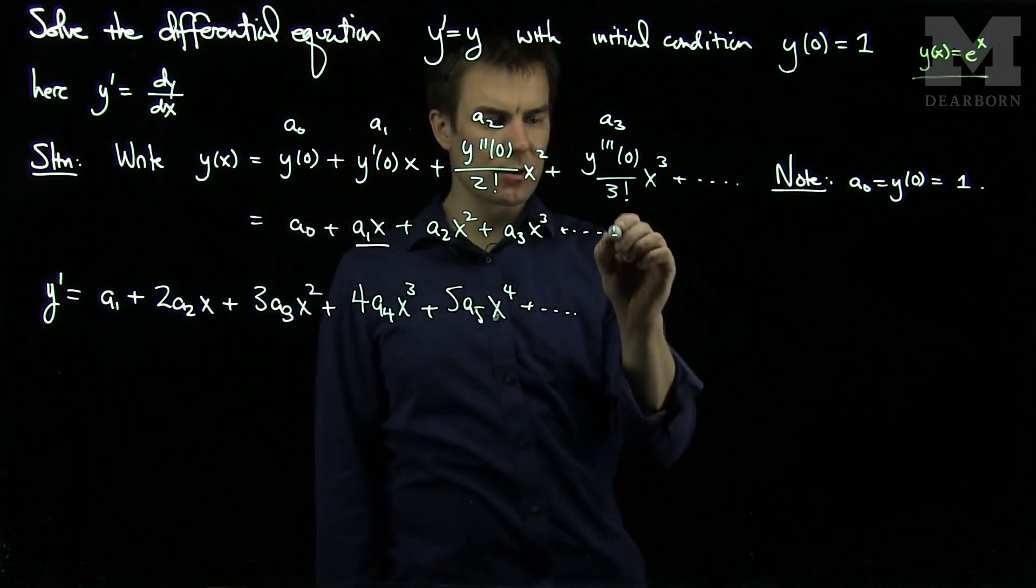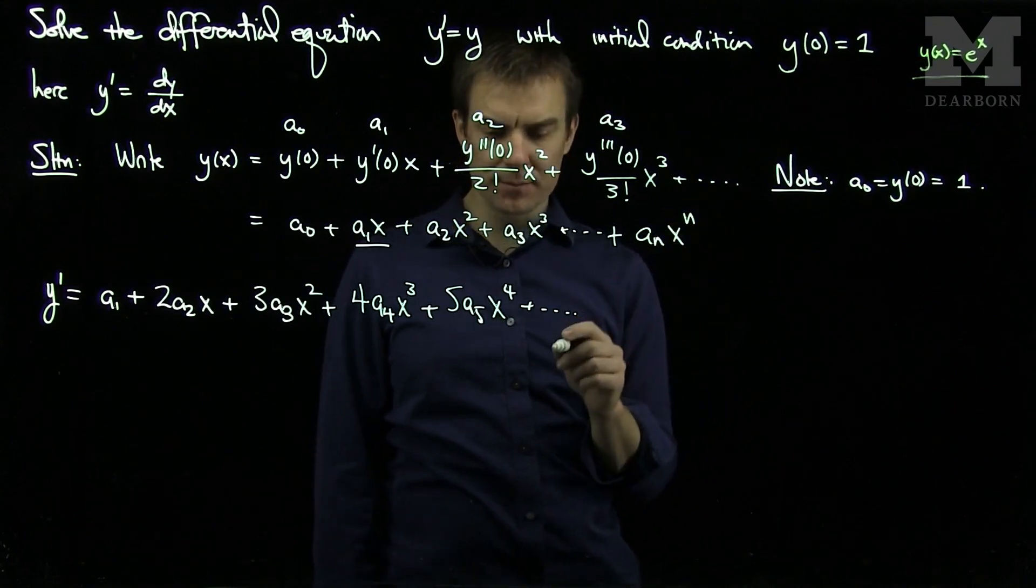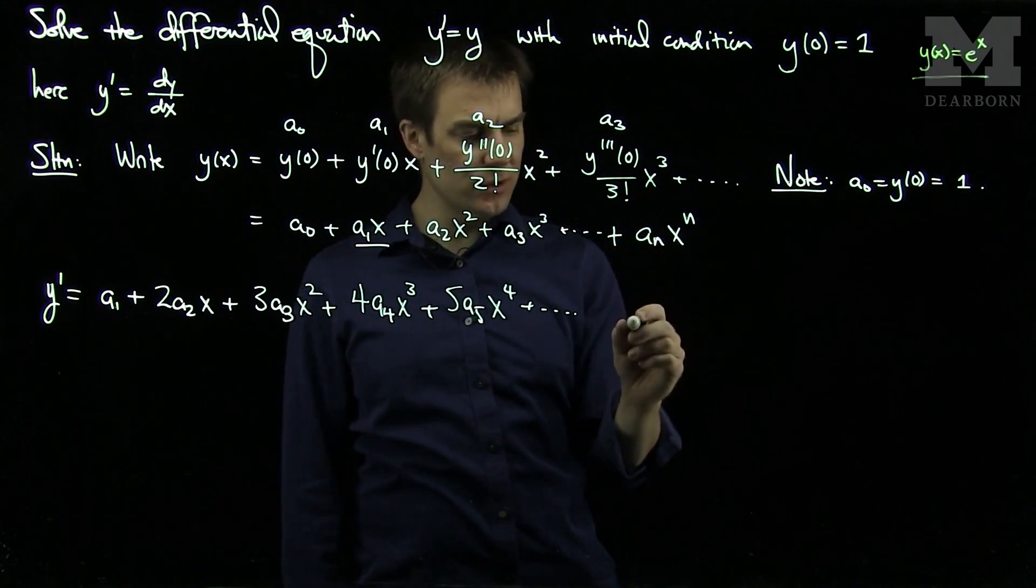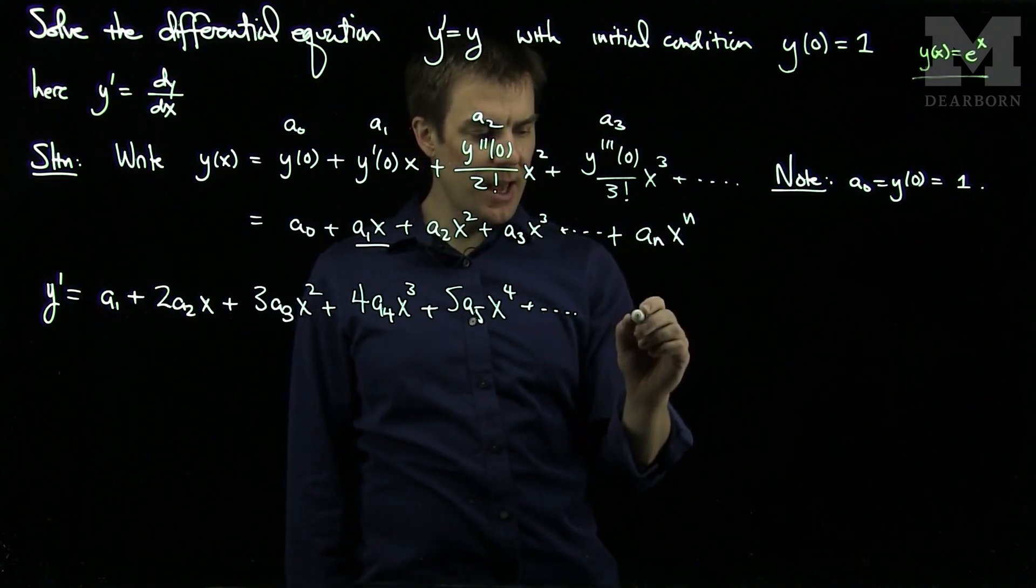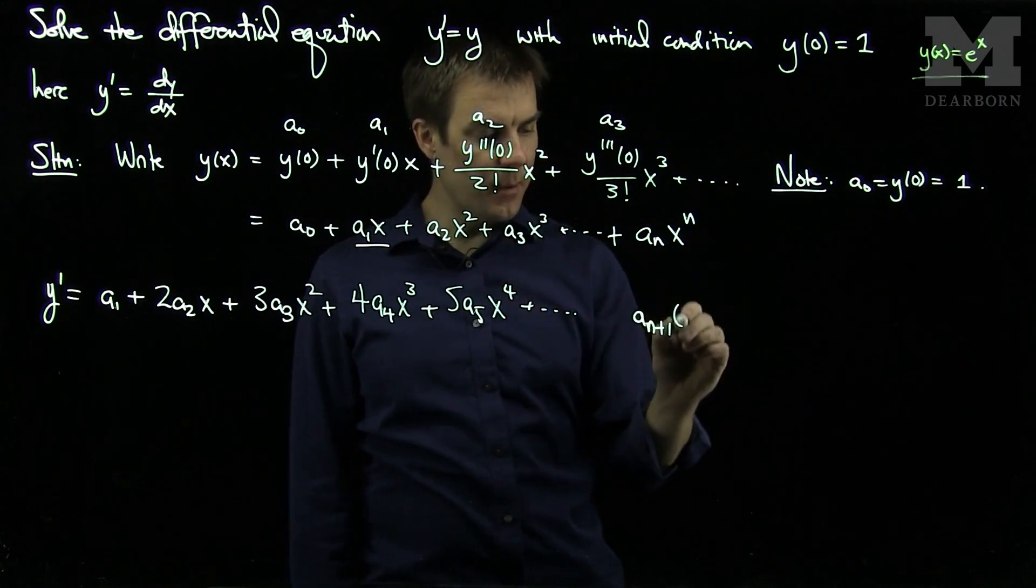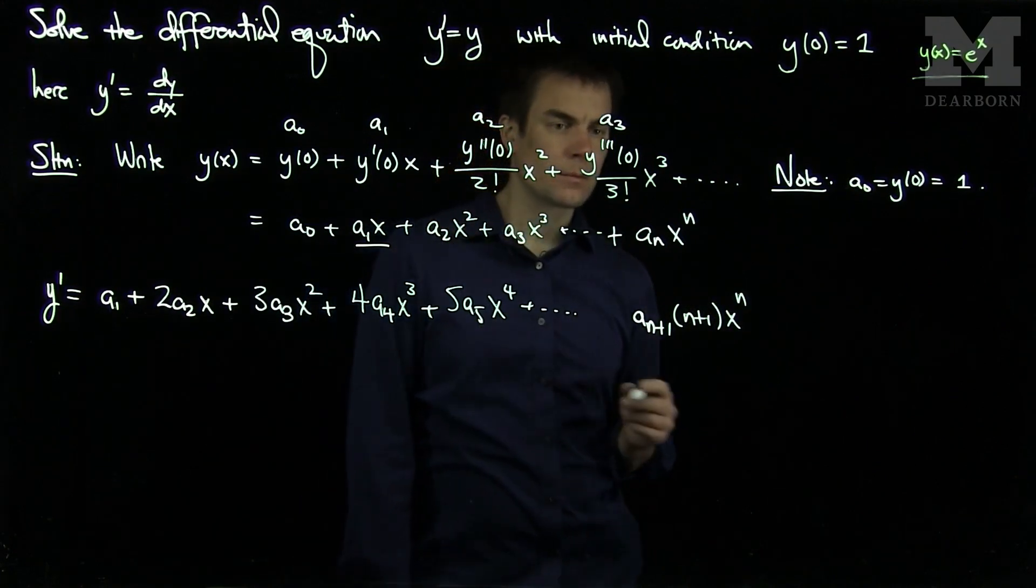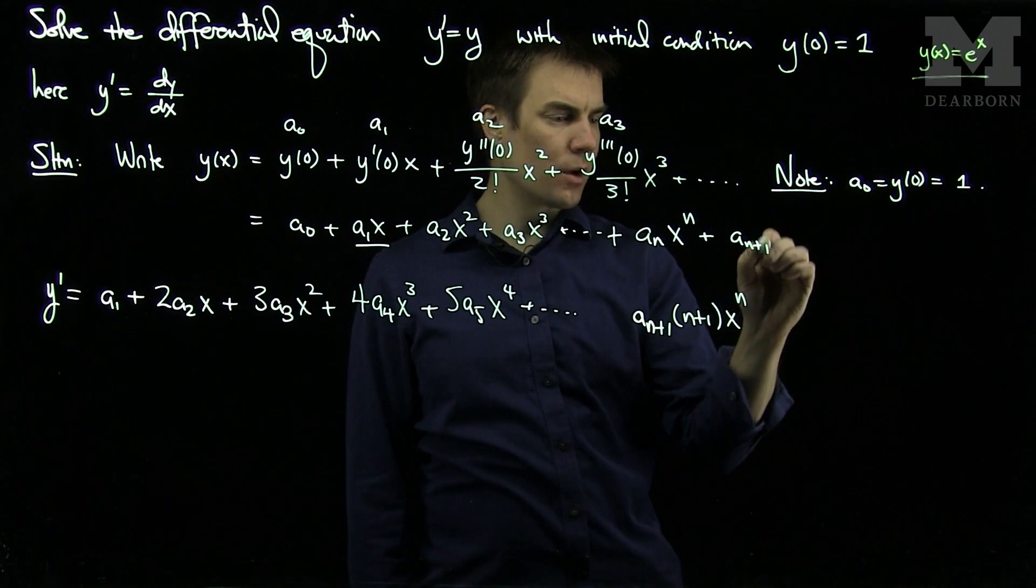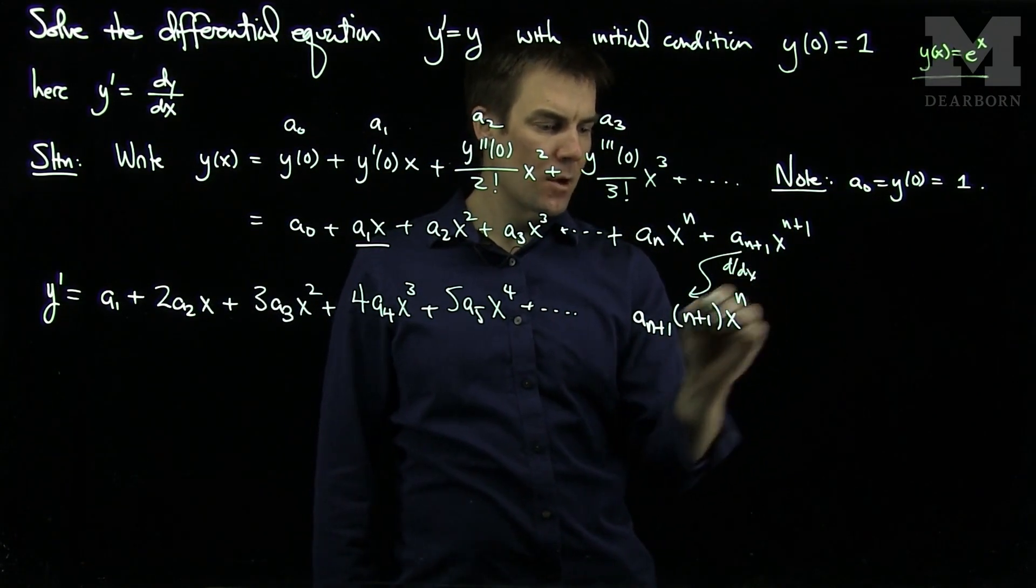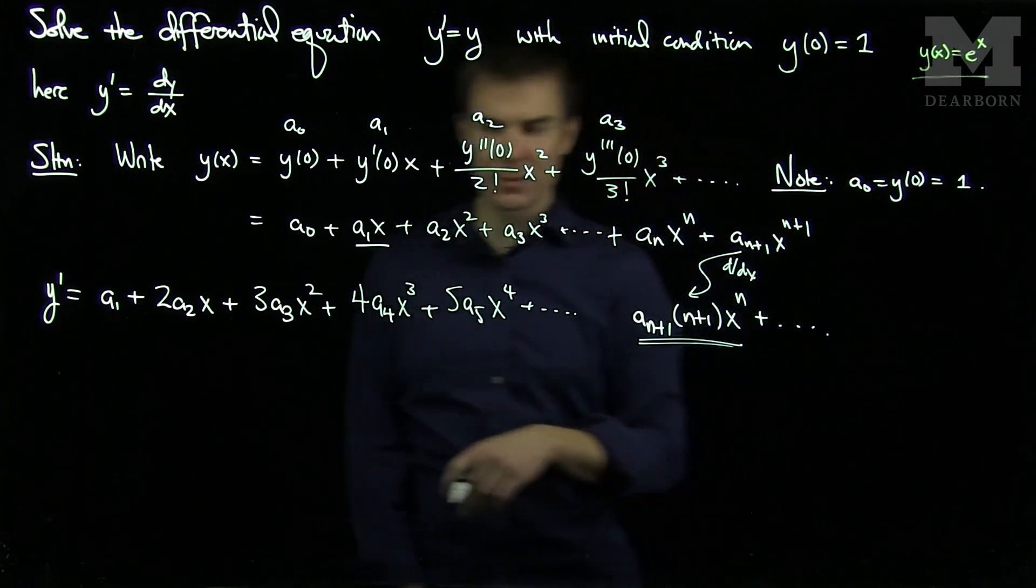Let's write down the general term in each of these series. The general term in this series will be anx to the n. And if I want to get to the nth term over here, it came from the derivative of the n plus first term. So we'll have an n plus 1, times n plus 1, times x to the n. Because the term an plus 1x to the n plus 1, when you differentiate this term, you'll get down over here. So all the terms are shifting over to the left by 1 unit in our expansion.